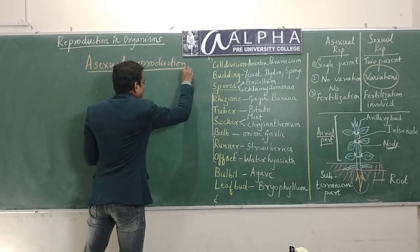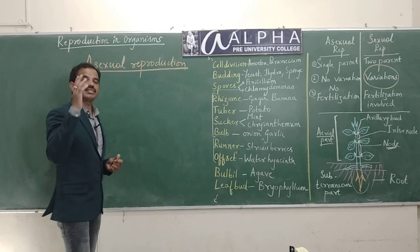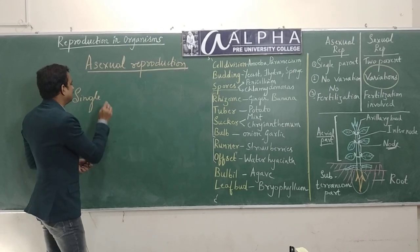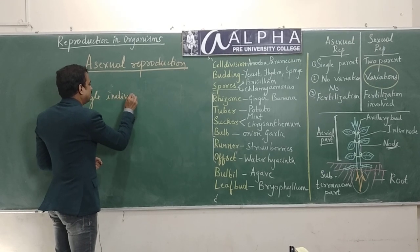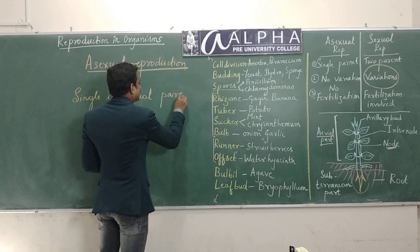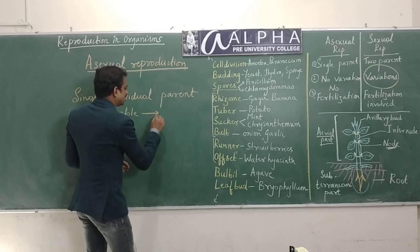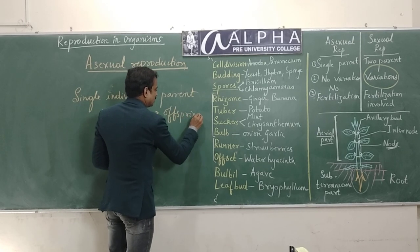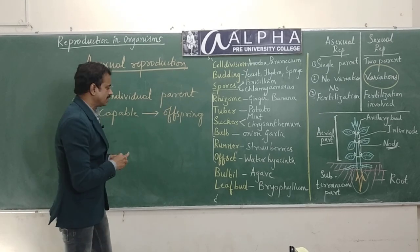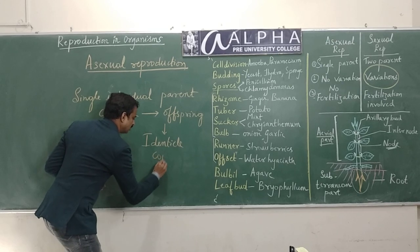Asexual Reproduction - as stated in your textbook - is a process of reproduction by a single individual parent capable of giving rise to offspring. These offspring born like this are identical to each other, and they are copies of their parents.